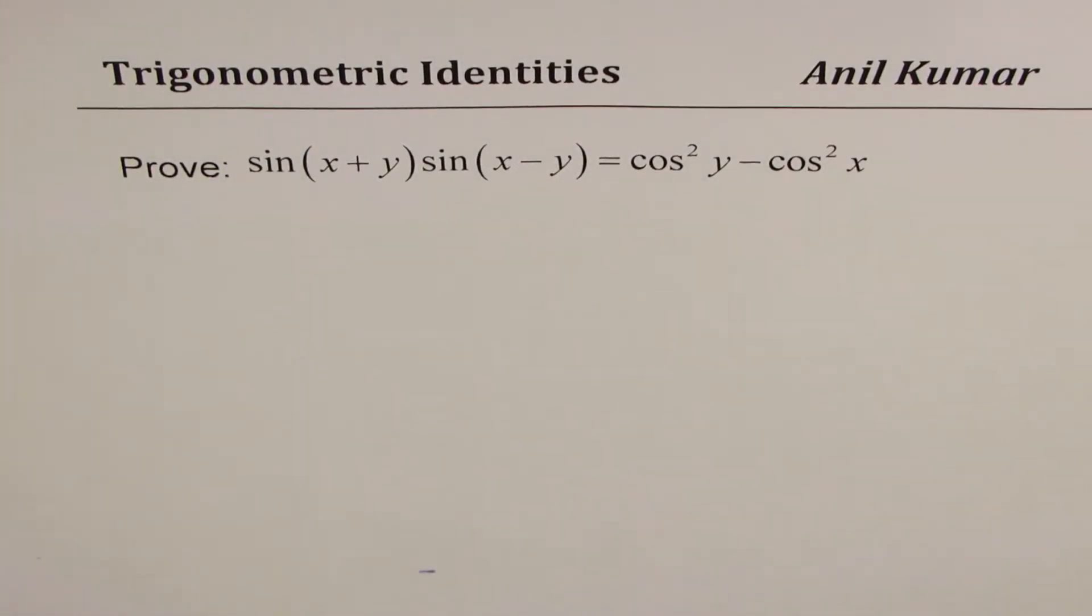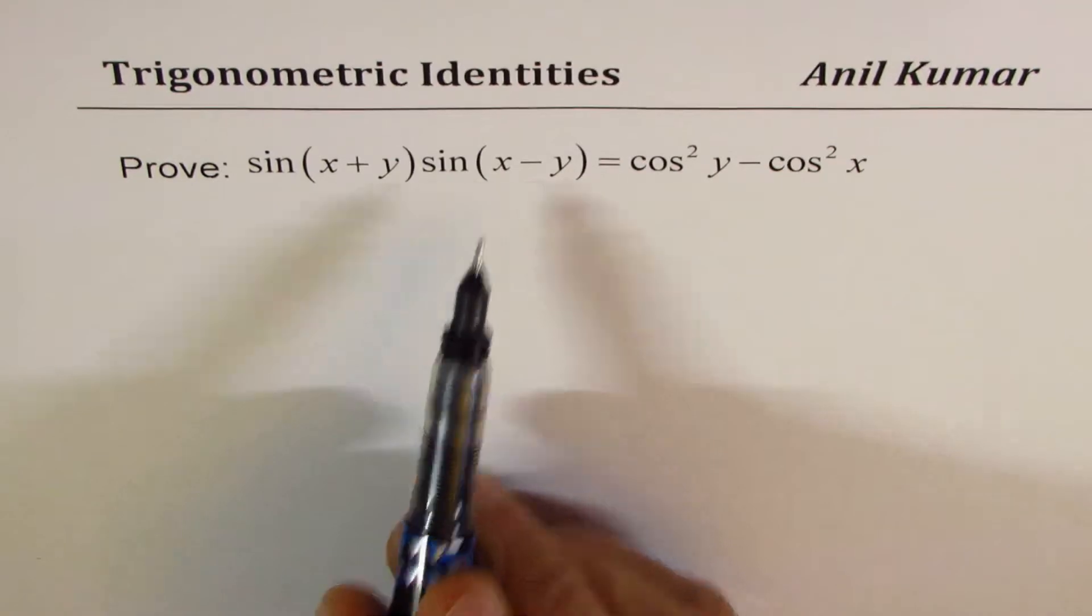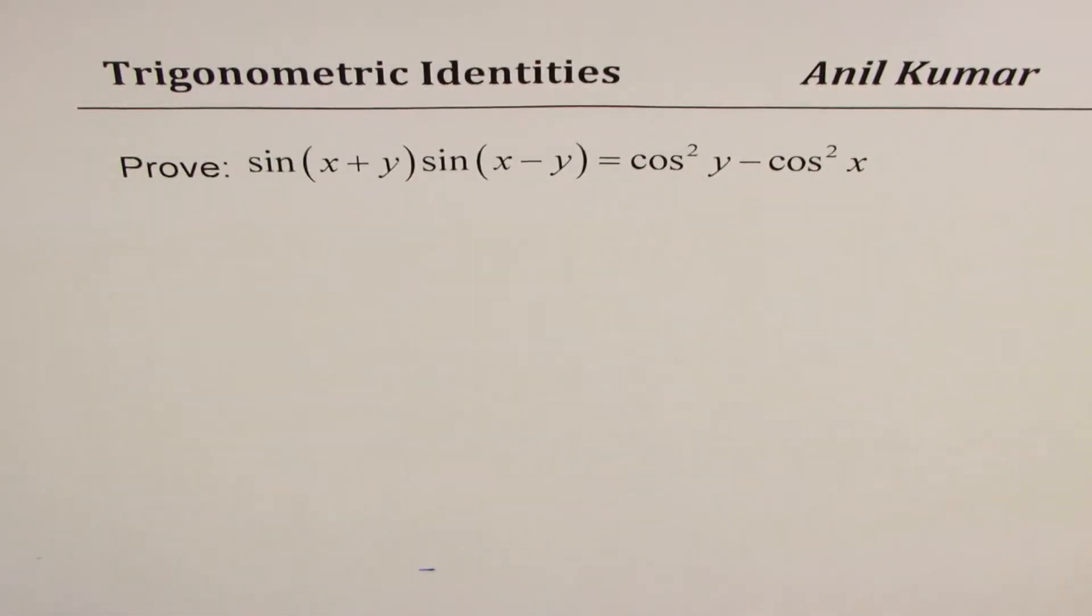I'm Anil Kumar sharing with you a trigonometric identity involving compound angles. We need to prove sin(x + y) times sin(x - y) is equal to cos²y minus cos²x.